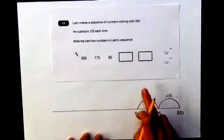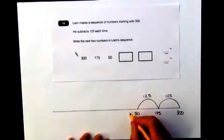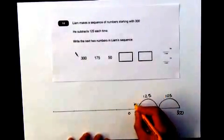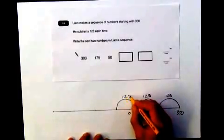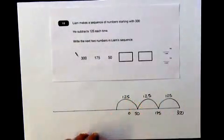Now if he takes away another 125, which he needs to do, he's going to jump over the zero point. So he will end up in the negative region of the number line, the minus. But what will that be?